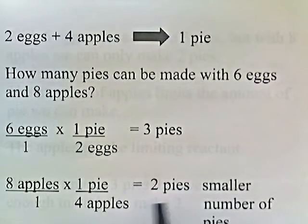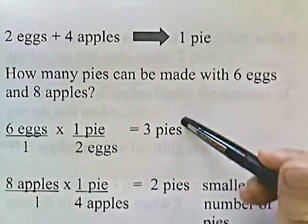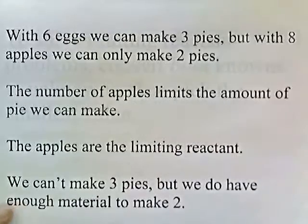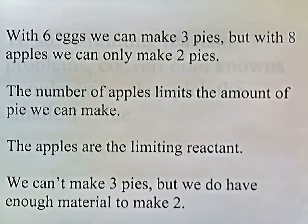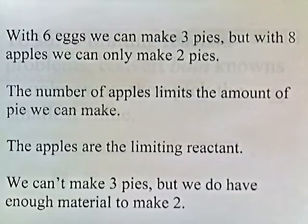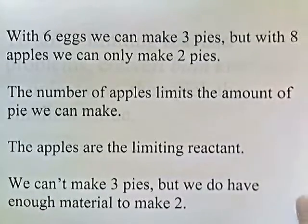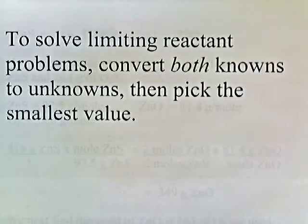Two pies is the smaller amount between the two. With six eggs we can make three pies, but with eight apples we can only make two pies. The number of apples limits the amount of pie we can make — the apples are the limiting reactant. So we can't make three pies, but we do have enough material to make two. To solve limiting reactant problems: convert both knowns to unknowns, then pick the smallest value.